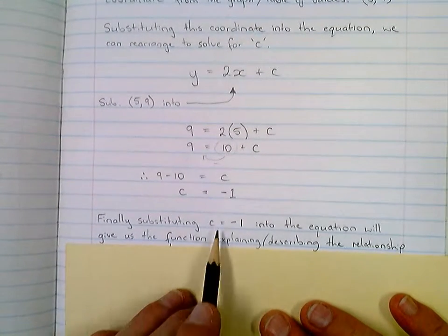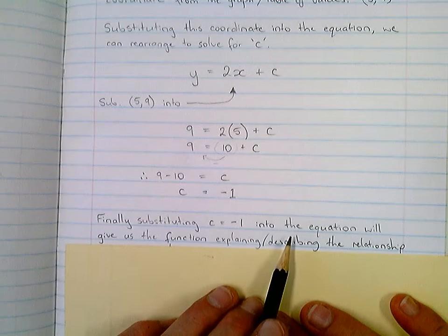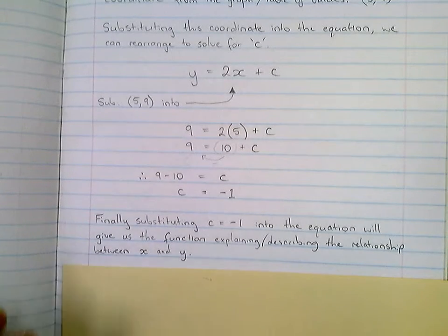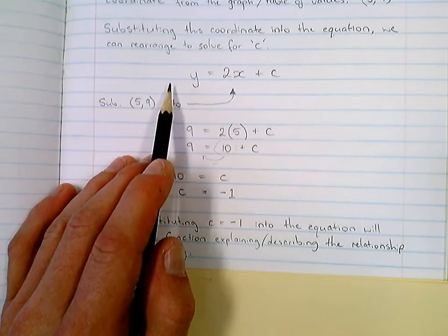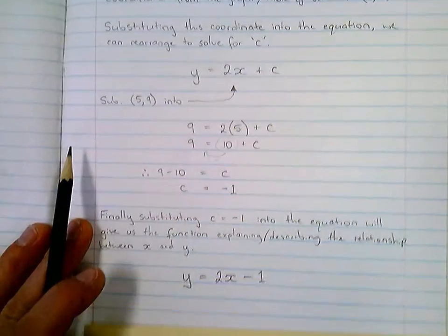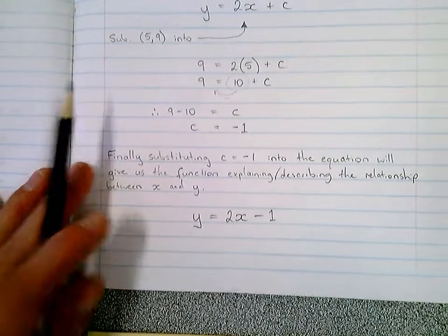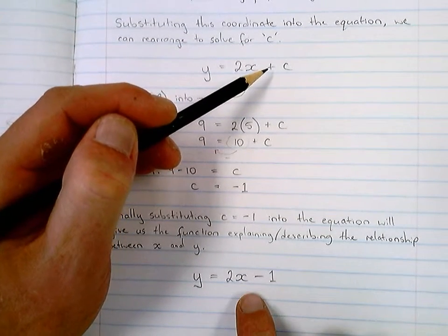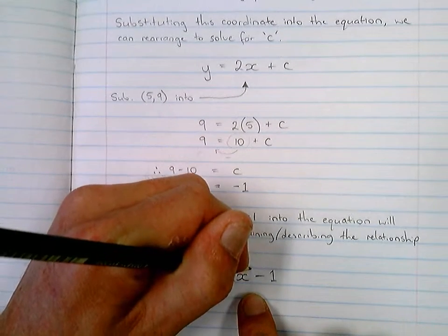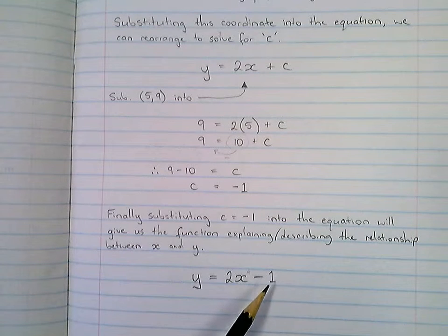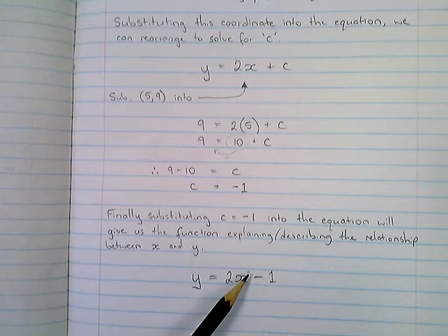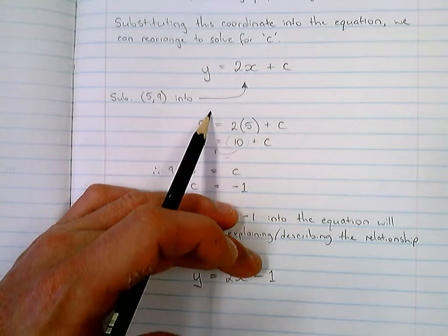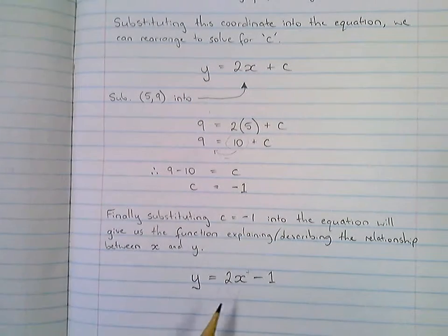Finally, substituting that value of c we just found negative 1 right here into the equation will give us the function explaining or describing the relationship between those variables, x and y. So, as a final step, I'm simply going to use this equation. And now I'm going to plug in the value negative 1 for c, which I just found, which is this. Now, it might be a little bit confusing to some people as to why there's no plus evident in here. The reason being is, well, you could actually write in a plus such that it read 2x plus minus 1. But at the end of the day, when we have a plus minus next to each other or a minus plus next to each other, we just get rid of the plus and it's insinuated that it's going to be a minus. So, it should be 2x take 1.